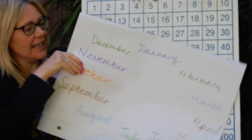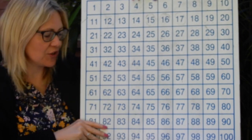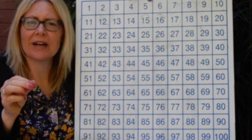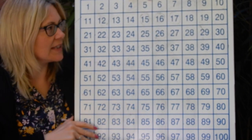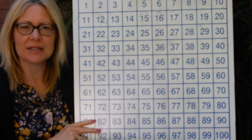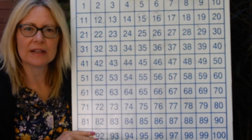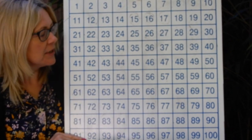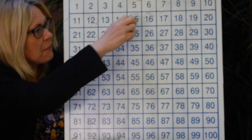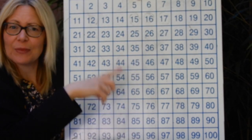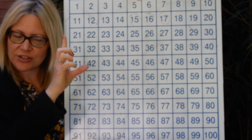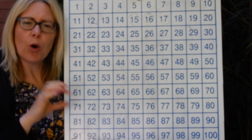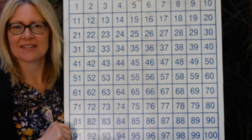Now I'm going to pop down my months of the year and reveal our 100 square. We are going to count in ones today all the way up to 100 - we haven't done that at all this week. I'm hoping you can see the numbers on screen, but otherwise you've got your 100 squares at home. Every number ending in five we go high, and every multiple of ten ending in zero we go low, all the way to 100.